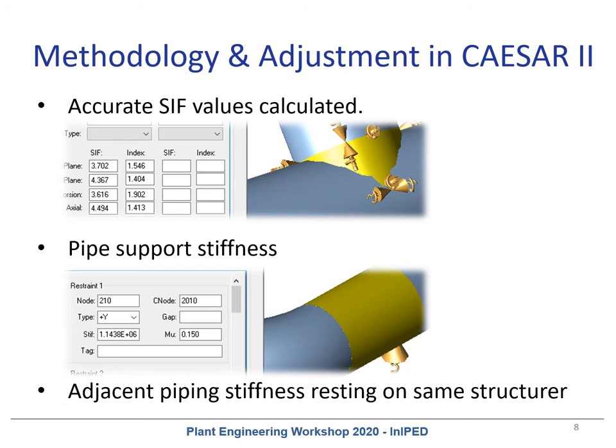The third refinement was using adjacent piping stiffness of pipes resting on the same steel structure. This is also an important aspect as their resistance reduces the structural movement due to slugging on the piping under concern. To obtain this, two runs were made in CAESAR 2: in the first run, thermal displacement is calculated, and in the second run, an axial force is calculated by placing an axial stop at the same node. Subsequently, the calculated force is divided by the major displacement to obtain the axial stiffness of the adjacent pipe.